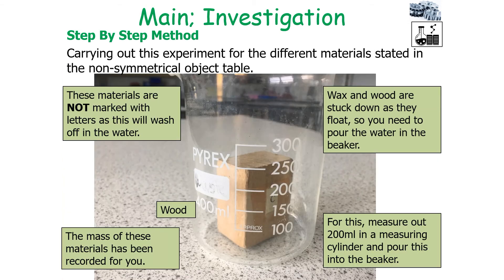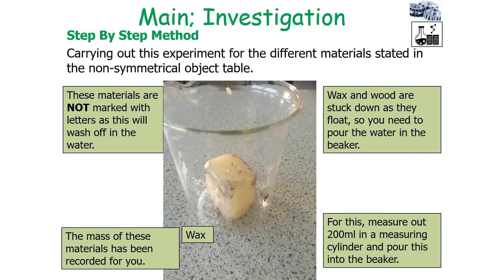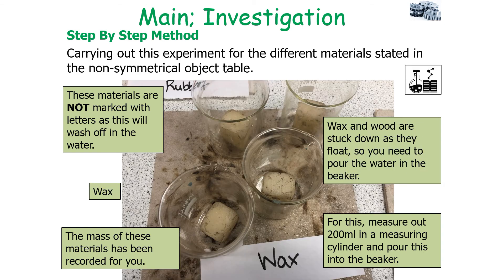If you are using materials such as wax or wood, they float in water. To carry out this investigation, you would measure the mass of the wax or wood beforehand, stick the piece down to the beaker, then measure out 200 millilitres of water in the measuring cylinder, pour this into the beaker, and then use that to work out your new level and the volume of that particular object.